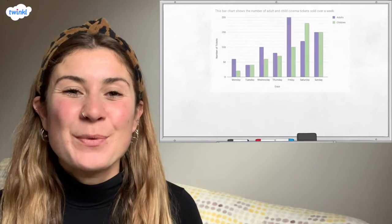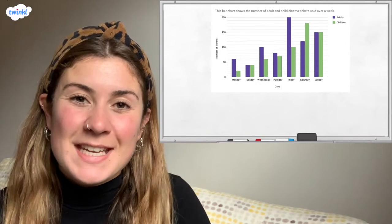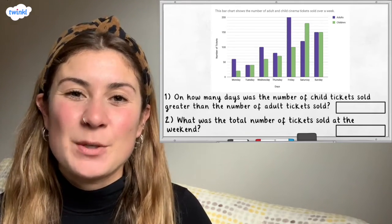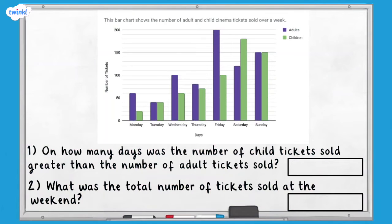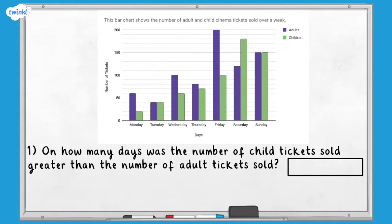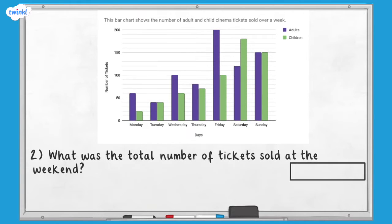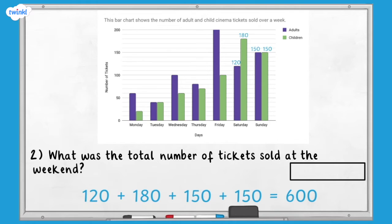Here's another bar chart. This one shows the number of adult and child cinema tickets that were sold over a week. Pause here and answer these questions about the bar chart. Question one: on how many days was the number of child tickets sold greater than the number of adult tickets sold? Question two: what was the total number of tickets sold at the weekend? The only day where the green bar representing children was higher than the purple bar representing adults was Saturday. Therefore the answer to question one is one. For question two you needed to find the total tickets sold for Saturday and Sunday. The answer was 600.